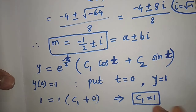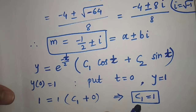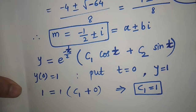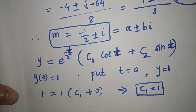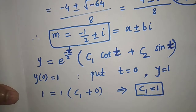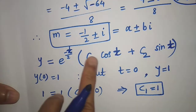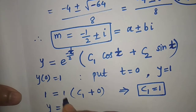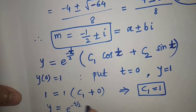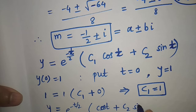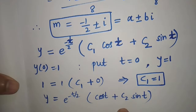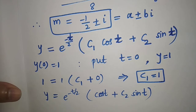We have also given that dy/dt at t equal to 0 is 0. Before using this, put the value c1 equal to 1 into the general solution: y equal to e raised to minus t/2 into bracket cos t plus c2 sin t. Now to find c2, use dy/dt at t equal to 0 equal to 0.